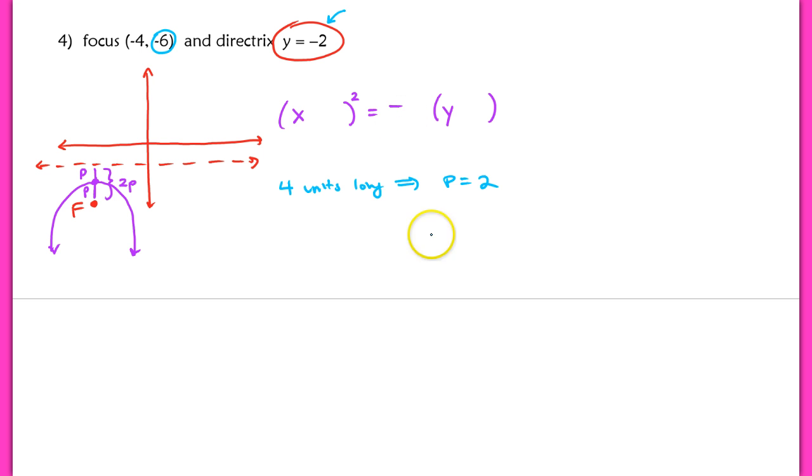So when we find the value that goes in front of our linear term, remember we just multiply p times 4, so we get 8, so that's why there's a negative 8 here, because it's opening downward. And then to find your vertex, you're just going to shift your focus up two units.